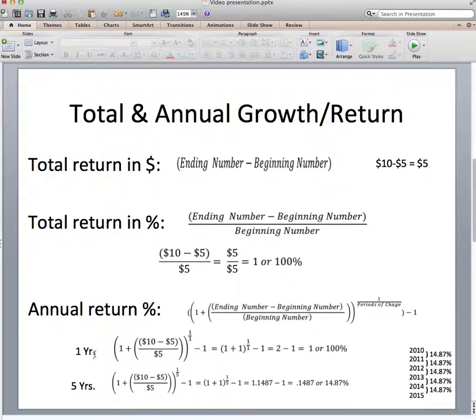So here's an example looking over just one year. 10 minus 5 divided by 5. That's 10 minus 5 is 5 divided by 5 is 1. So 1 plus 1 to the 1 over 1. The reason why we did 1 over 1 is it's 1 period, 1 year of change. So 2 to the 1st power is simply 2, minus 1 is 1 or 100% growth.